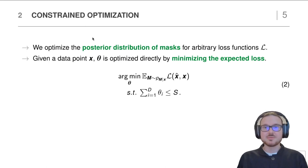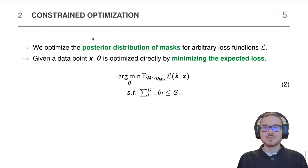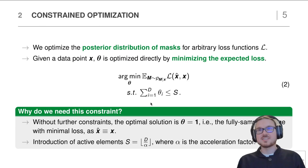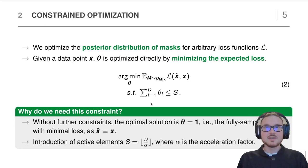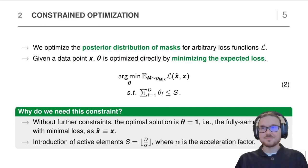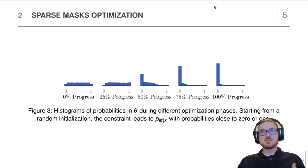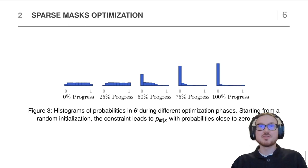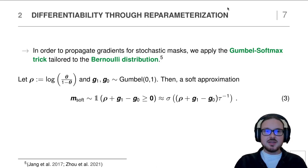We optimize the posterior mask distribution after observing data points for arbitrary loss functions L. Given some training data point x, we optimize our parameters directly by minimizing the expected loss, approximated via Monte Carlo. We have a constraint: without it, the optimal solution would be to set all thetas to one, which would approximate the fully sampled image. So we introduce a limit on the number of active elements derived from the acceleration factor, constraining the sum of all thetas — resembling an L1 penalty. During optimization, the solution becomes very sparse, with values approaching zero or one.